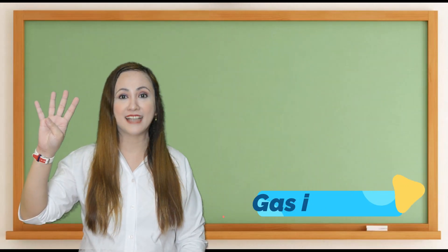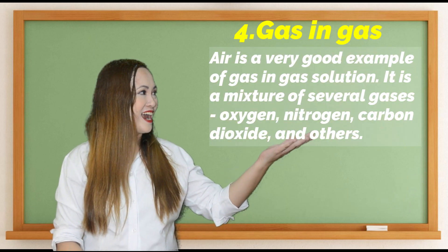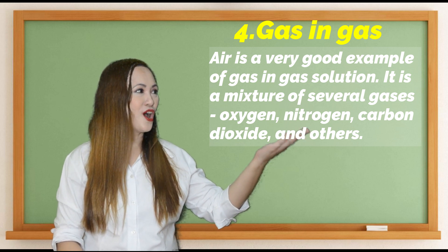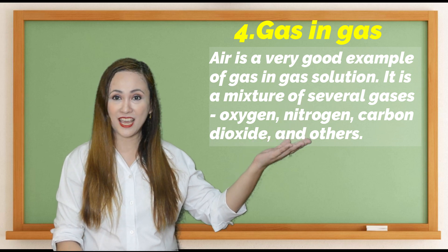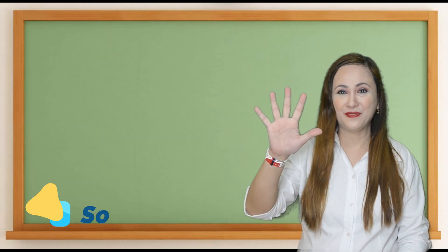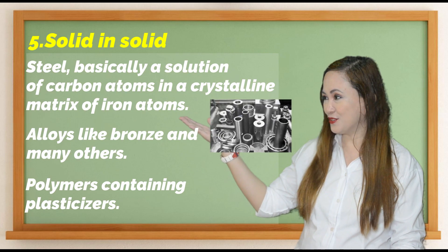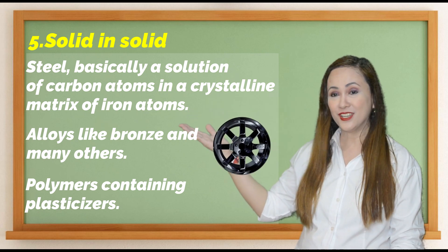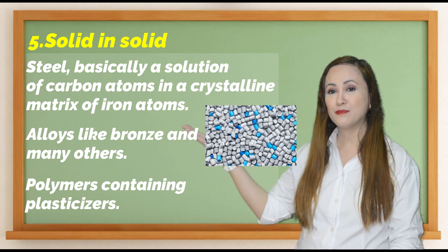The fourth one is gas in gas. Air is a very good example of a gas in gas solution. It is a mixture of several gases like oxygen, nitrogen, carbon dioxide, and others. And the fifth is solid in solid — steel is basically a solution of carbon atoms in a crystalline matrix of iron atoms. Alloys like bronze and many others, and polymers containing plasticizers, are also examples.